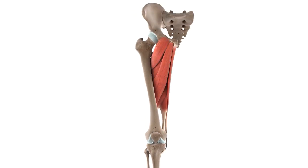The adductor magnus muscle is located in the lower limb in the medial compartment of the thigh and is the most posteriorly located of the adductor muscles. The medial compartment can be found on the inside of your thigh, closest to the midline of your body.